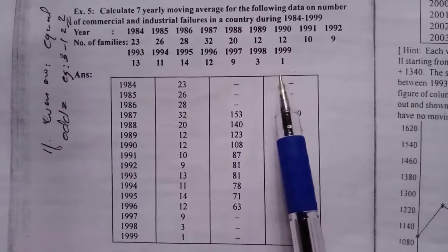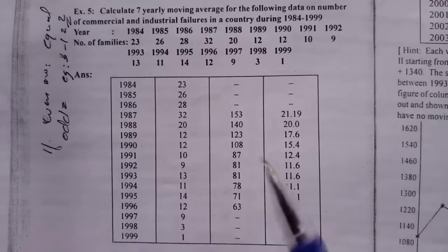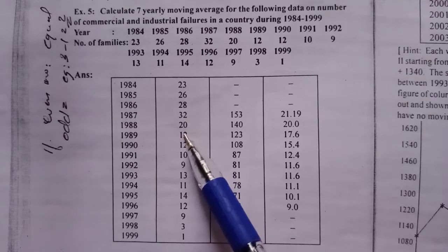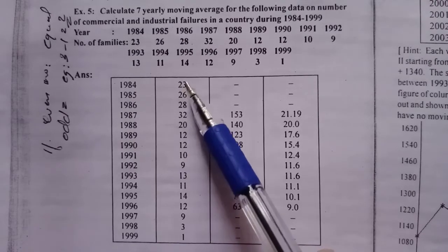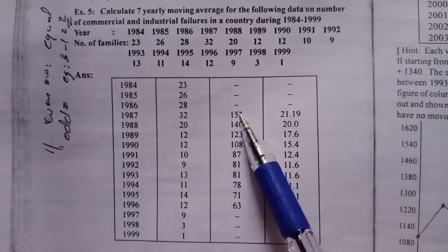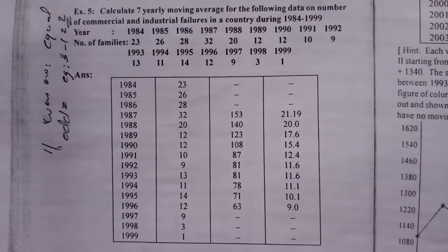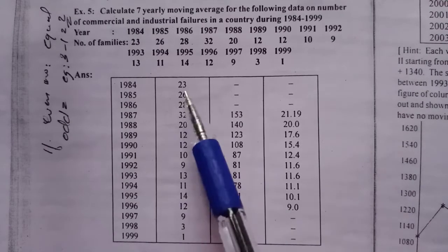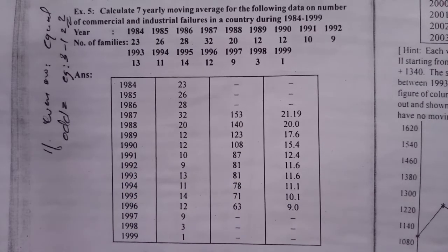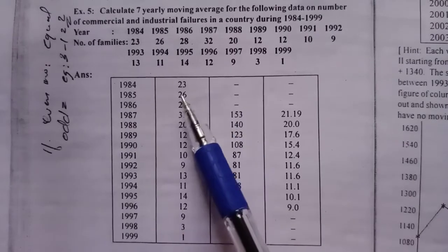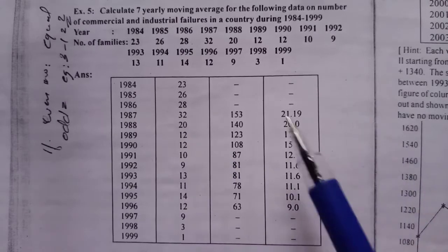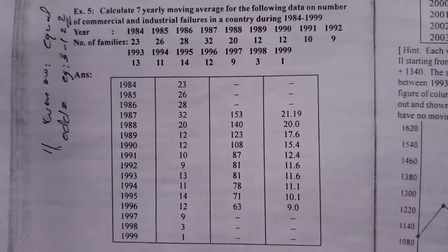The 7-yearly moving total is 153. This is placed at the center. The center is position 4 — that is, 1, 2, 3, 4. The total is 85. The values include 26, 28, 32, 22, 12, 10. This gives the 7-yearly moving total, placed at the center year.